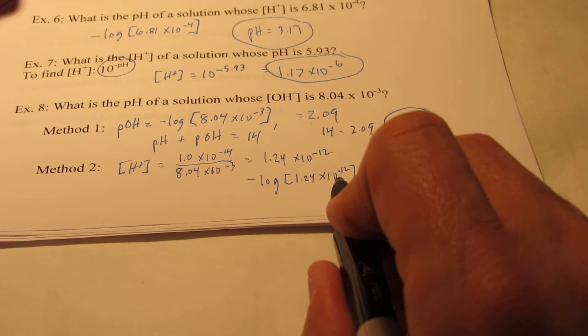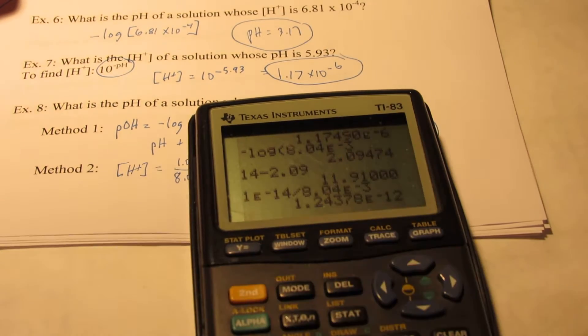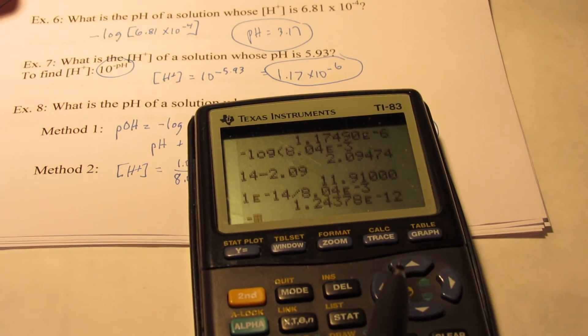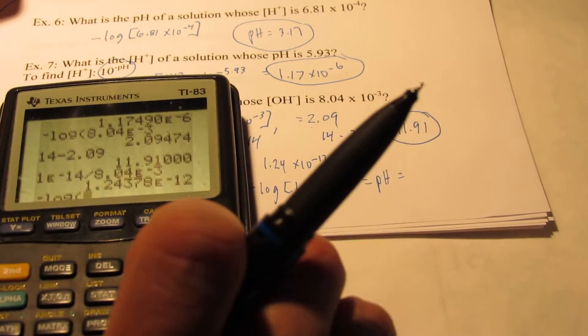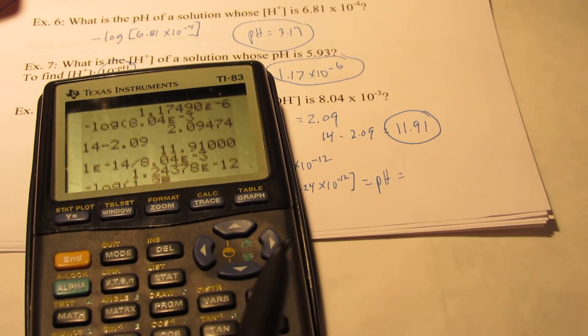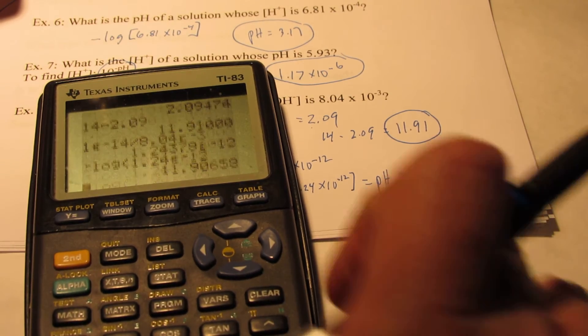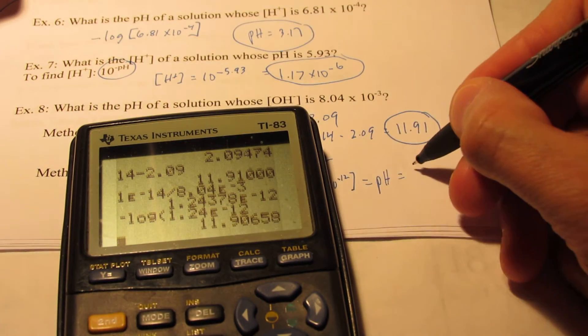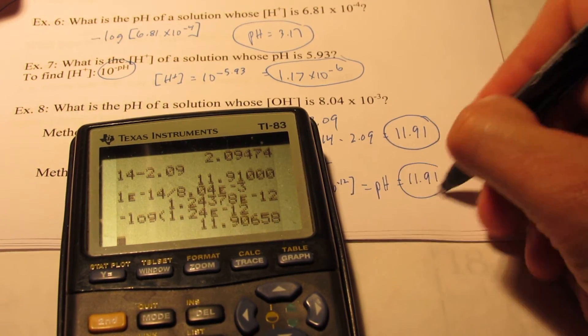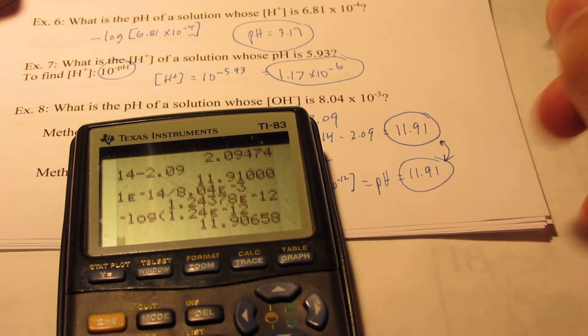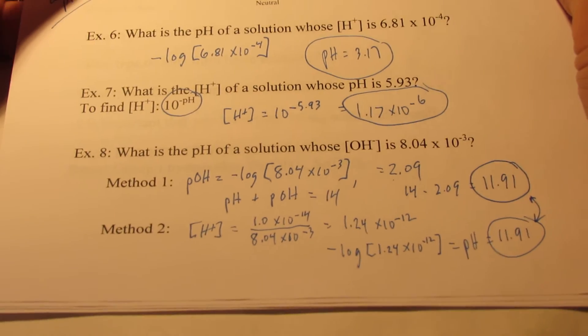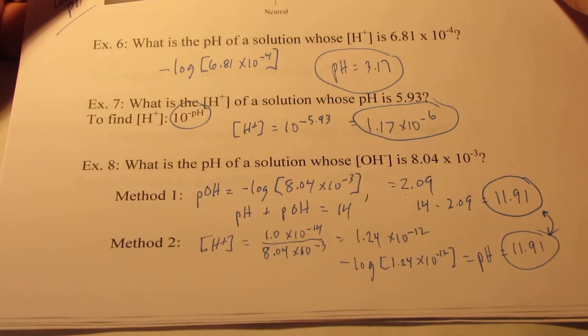But let's plug it in anyway and take a look. So we'll hit negative log, and we're going to type in 1.24 second EE negative 12, enter, and we get 11.91 again. Same, same. Match, match. Okay, so find the method that you feel most comfortable with and use it.